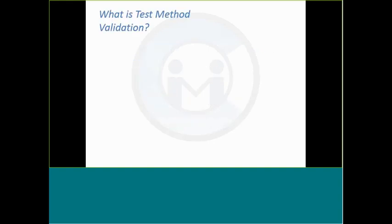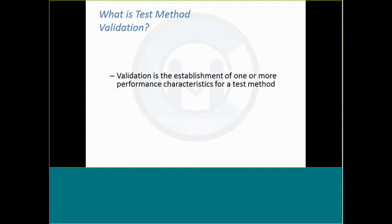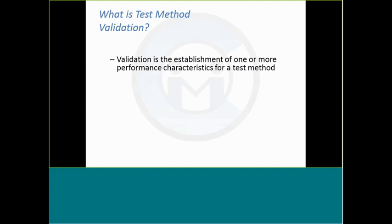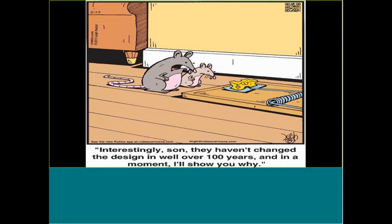So the first question, of course, is what is test method validation? And a lot of these I have taken a presenter's privilege, if you will, to try and put them into the language that I can understand that I hope you will also. Validation is the establishment of one or more performance characteristics of the test method, and this can be done by single lab validation or by multi-lab collaborative study where many labs are involved. So it's the establishment of performance characteristics. Now you may say to yourself, well what the heck is a performance characteristic and why is it important?